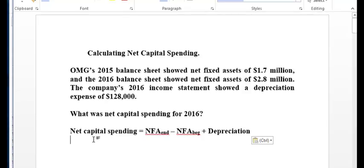So we're looking for net capital spending. So NFA is the net fixed assets. So when did we end? When did we begin? And then we're going to add depreciation to that. So let's show you how this works.